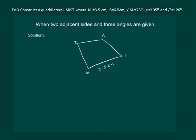IS is equal to 6.5 cm, angle M is equal to 75 degrees, angle I is equal to 105 degrees, and angle S is equal to 120 degrees.